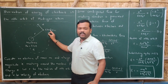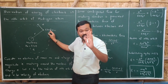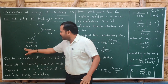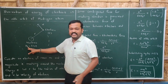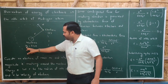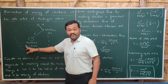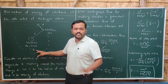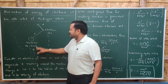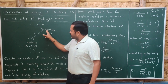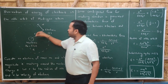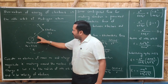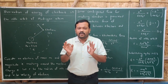Let us consider the electron of mass m and charge e, which is revolving around the nucleus of charge Ze. Since we are taking this for the hydrogen atom, let us substitute Z = 1, so the charge of the nucleus is also e. This is +e and the electron is -e. The electron is revolving with velocity v, and let r be the radius of the nth orbit.